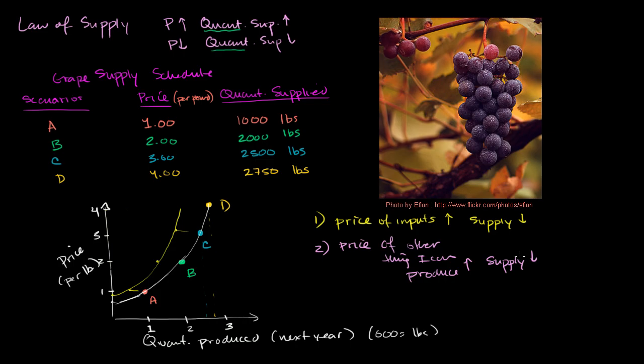The important thing is, in any of these circumstances, you literally just think it through. Don't just look at what I'm writing here and try to memorize it. This is really just a way to think about things. Obviously, if I can make more money off of blueberries, I'm going to allocate more land to blueberries than grapes. Supply of grapes will go down.